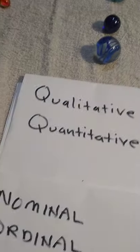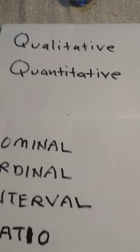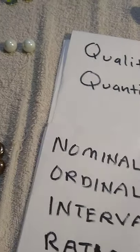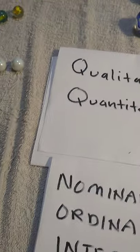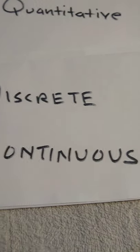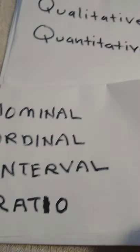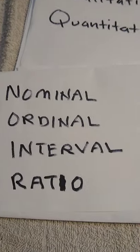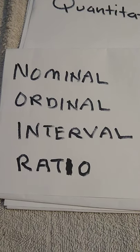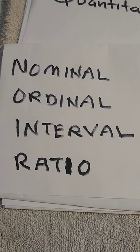These terms are also covered and defined in the book, which will be linked in the description below. Today we looked at qualitative and quantitative data, discrete and continuous data, and I described four levels of measurement — nominal, ordinal, interval, and ratio — that will determine what sort of statistics we can calculate.